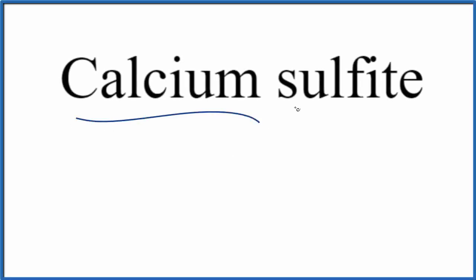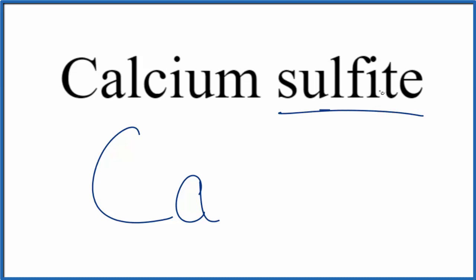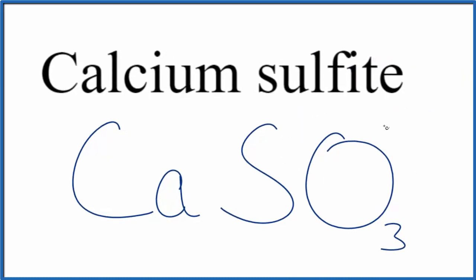To write the formula for calcium sulfite, the first thing we'll do is write the element symbol for calcium — that's just Ca. For the sulfite, you won't find that on the periodic table. It ends in -ite, which means it's a polyatomic ion. So you either memorize that the sulfite ion is SO3 with a 2- ionic charge, or, if you're allowed, you look it up on a table of polyatomic ions.